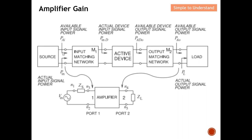When we look at the input of the input matching network, this form of power is called the available input signal power. At the output of the input matching network, we call this the actual device input signal power — the amount of power actually sent to the amplifier. At the output of the amplifier, this is known as the available device output signal power, and at the input of the load, we call this the available output signal power.